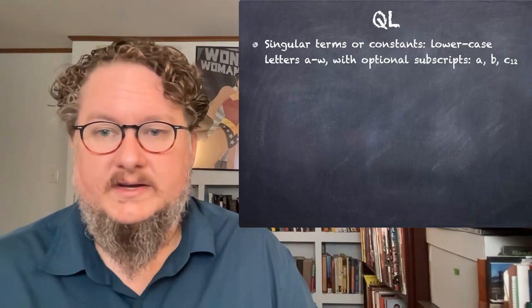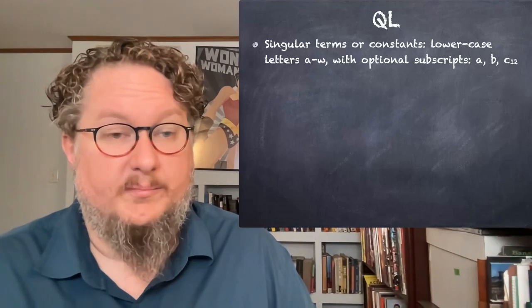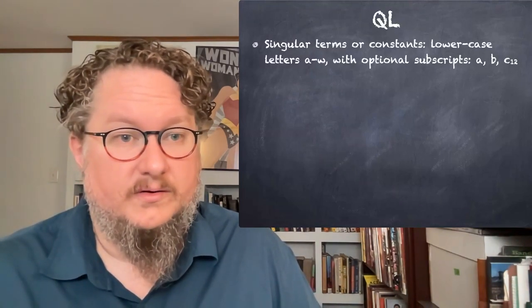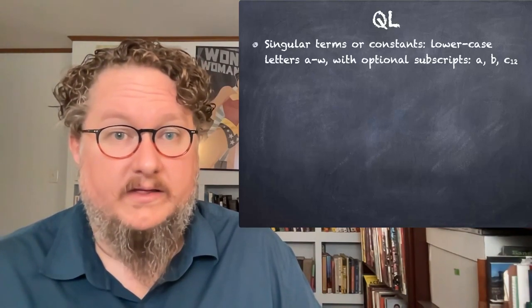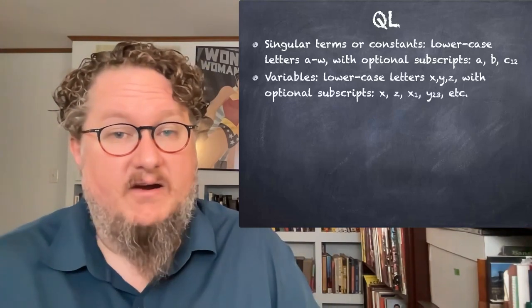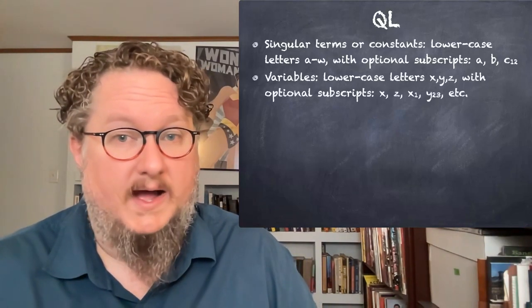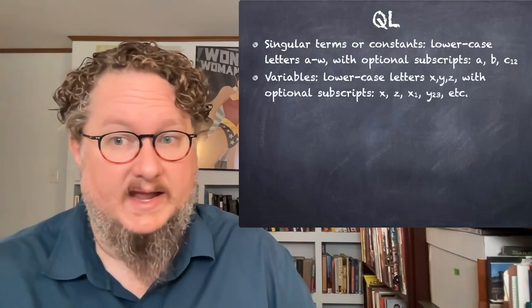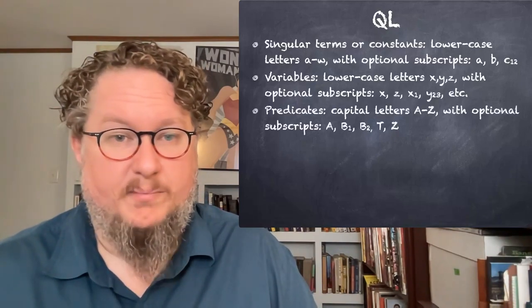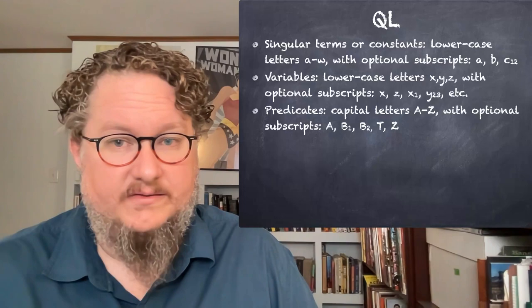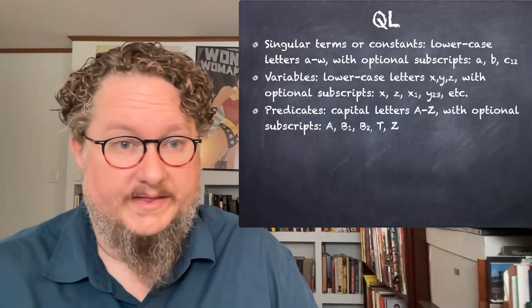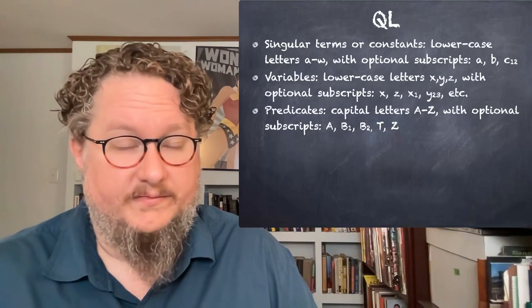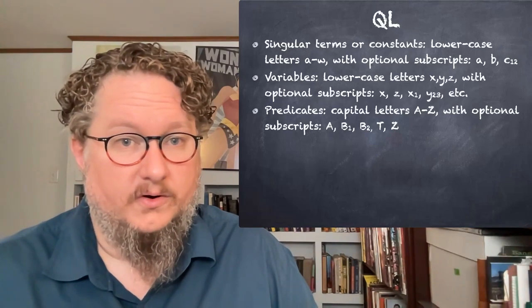Singular terms refer to what we might call proper names in English — Socrates, Beyonce, the Eiffel Tower, Carbondale. We're going to represent all of these sorts of proper names with constants, that is, lowercase letters. Then we have variables — the lowercase letters X, Y, and Z, with or without subscripts. They don't stand for specific things with proper names, but for unknown objects. We also have predicates, represented with capital letters A through Z, with or without subscripts. These are properties or relations that go before some number of singular terms or variables.